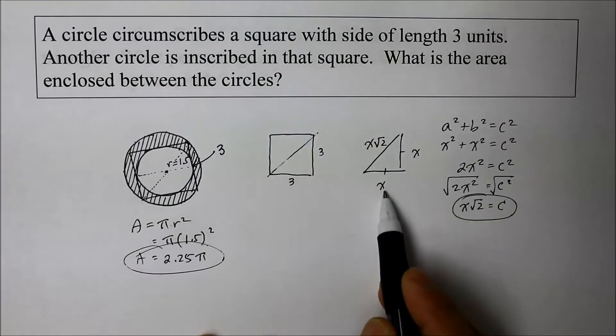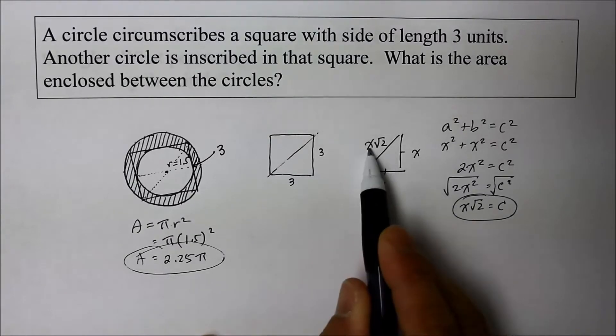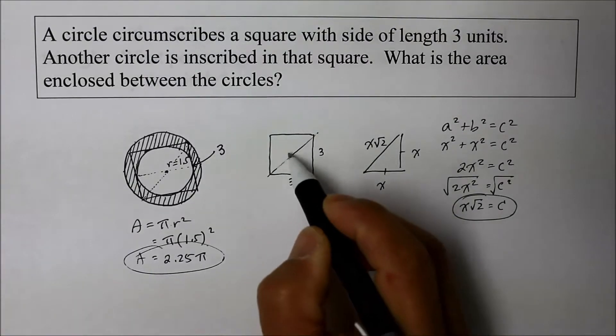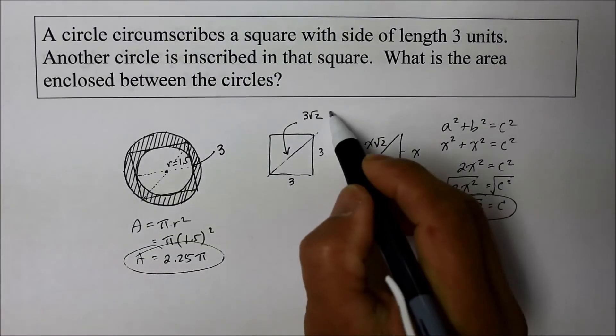So whatever number you substitute in, for example, in this case 3, if that's 3, and that's 3, this is simply 3 square root of 2. So there it is. That's 3 square root of 2. That's the diameter.